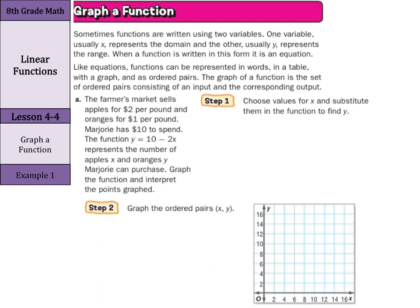Well, our first step is to choose values for x and substitute them in the function to find y. So, we can make ourselves a table here where we have x. We can have our 10 - 2x, which is our rule, and that will get us to y. Now, for our x values, we can have 0, 1, 2, and 3.